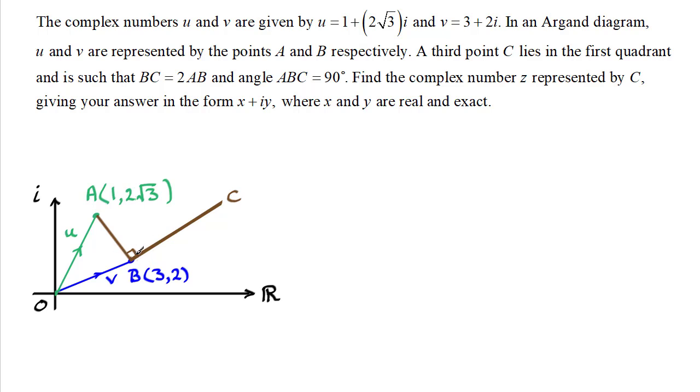And you can see bc is twice the length of ab and we've got the right angle here. Now in order to get the complex number z that goes from the origin o to c, what I'm going to be doing is working on displacements. I think you'll find this is the quickest, easiest way of doing it.